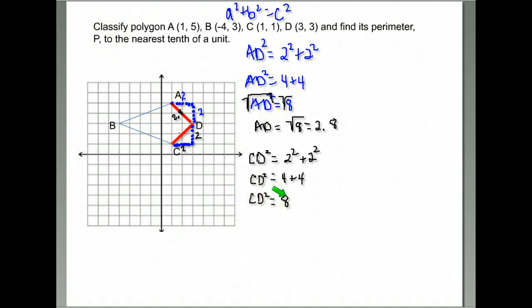And the last step is to take the square root of both sides to get rid of that squared that was stuck on the CD. And we get CD is also the square root of eight, which if we put in our calculator is 2.8.